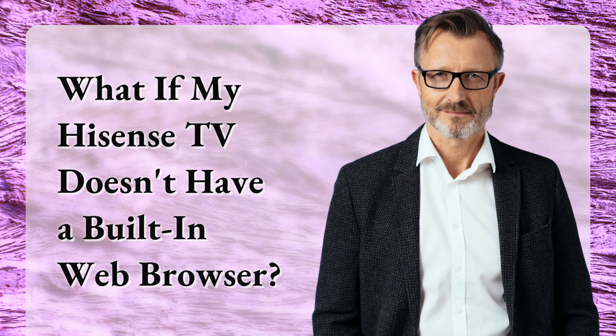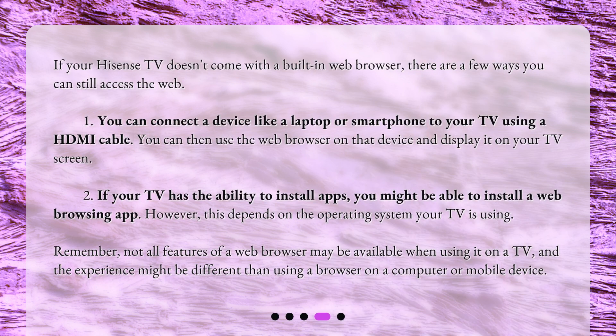What if my Hisense TV doesn't have a built-in web browser? If your Hisense TV doesn't come with a built-in web browser, there are a few ways you can still access the web. 1. You can connect a device like a laptop or smartphone to your TV using an HDMI cable. You can then use the web browser on that device and display it on your TV screen. 2. If your TV has the ability to install apps, you might be able to install a web browsing app. However, this depends on the operating system your TV is using. Remember, not all features of a web browser may be available when using it on a TV, and the experience might be different than using a browser on a computer or mobile device.